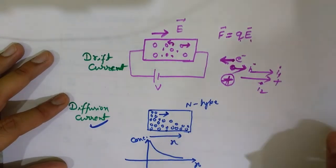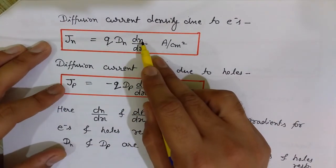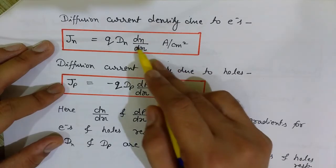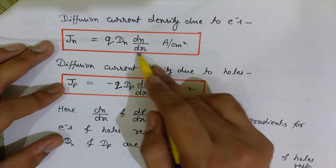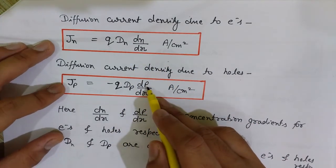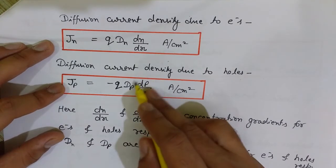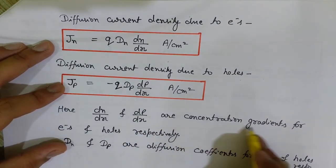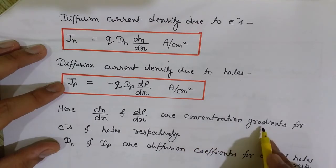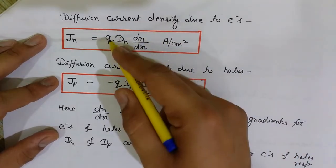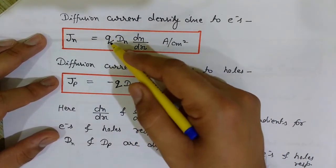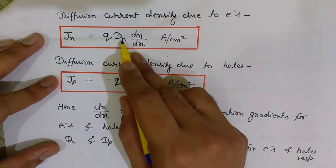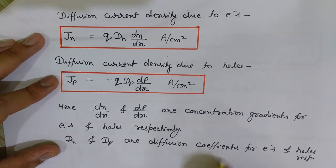In these formulas, x is the distance — as shown in the diagram where we move in the x direction. n and p are the concentrations of electrons and holes respectively. So dn/dx is the rate of change of electron concentration with distance x, and dp/dx is the concentration gradient of holes — meaning the slope of the concentration. q is the charge on electrons and holes, and Dn and Dp are the diffusion constants for electrons and holes respectively.